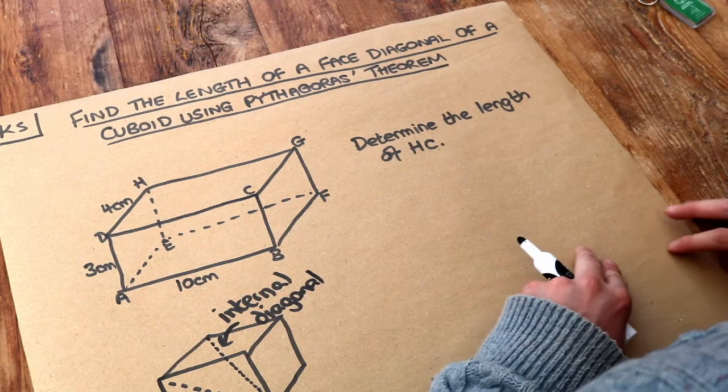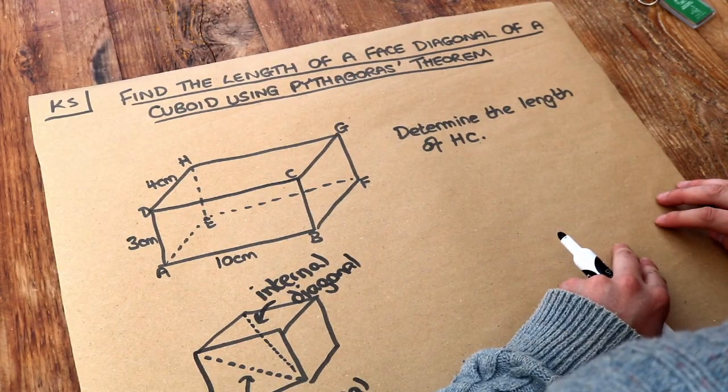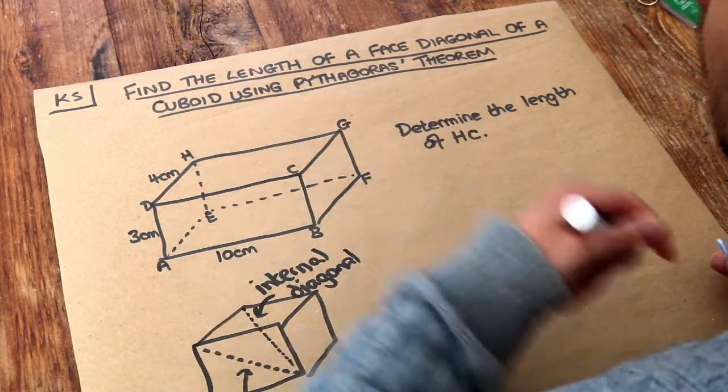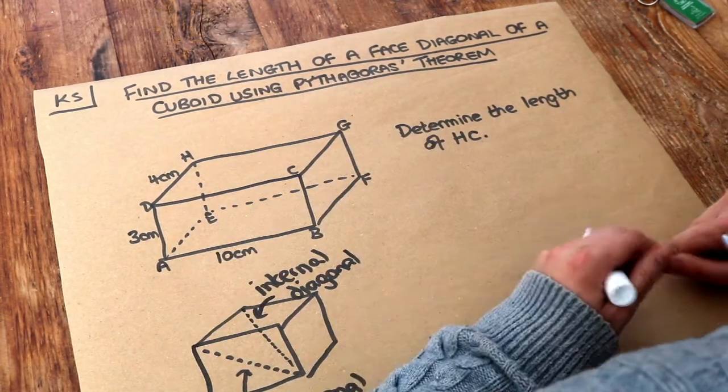Now this is sometimes known as 3D Pythagoras because we're using Pythagoras, which works on 2D right-angled triangles, in a 3D setting.